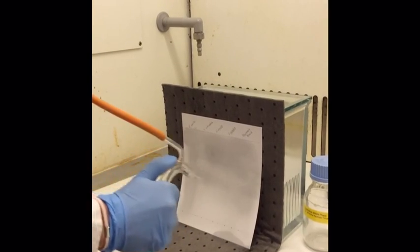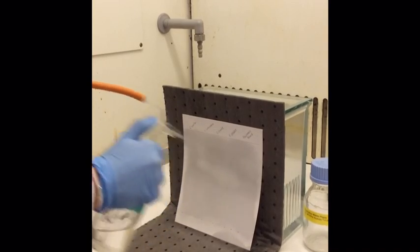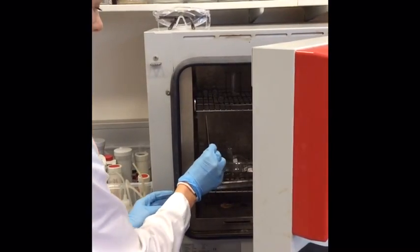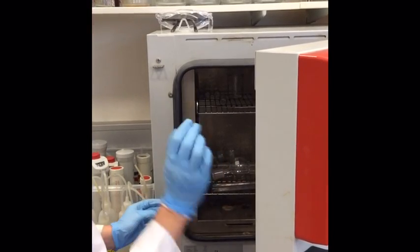Once dry, spray the plate with the visualizing reagent, making sure that the entire plate is covered. Then place the TLC plate in the oven for five to ten minutes.